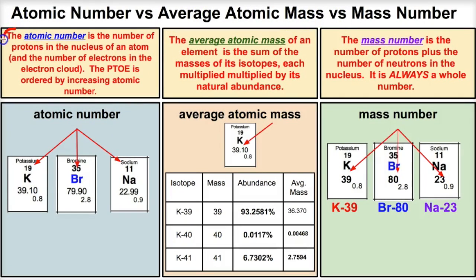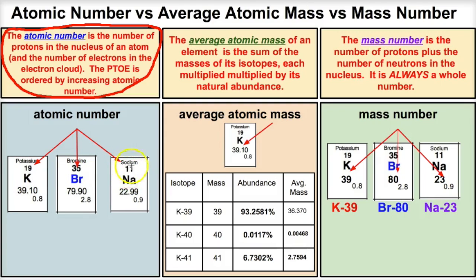What is the atomic number and how does it work? If we take a look at the periodic table of elements, at the top of each little periodic table box you're going to see a number. For example, on potassium you'll see 19, on bromine you'll see 35, on sodium you'll see 11. These are the atomic numbers, and the periodic table is ordered by increasing atomic number.